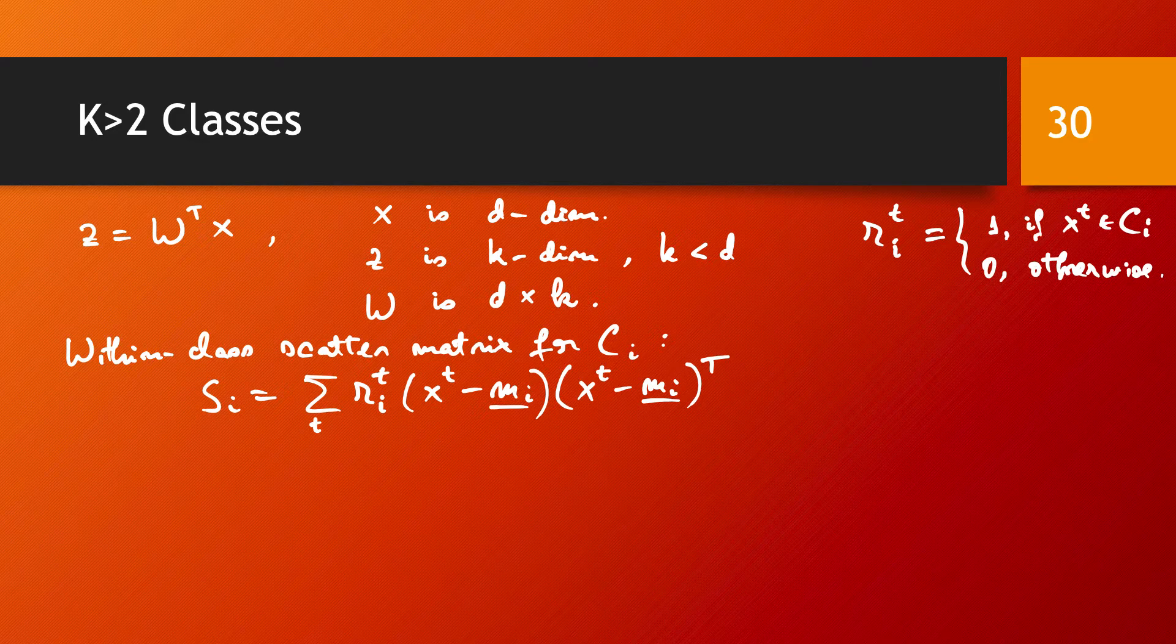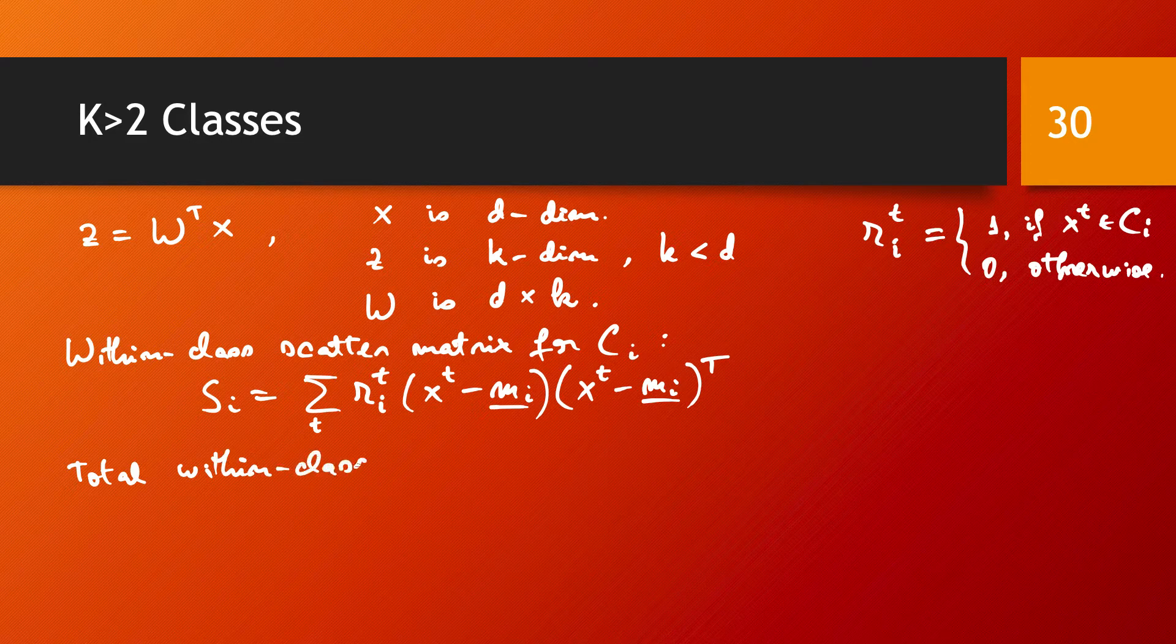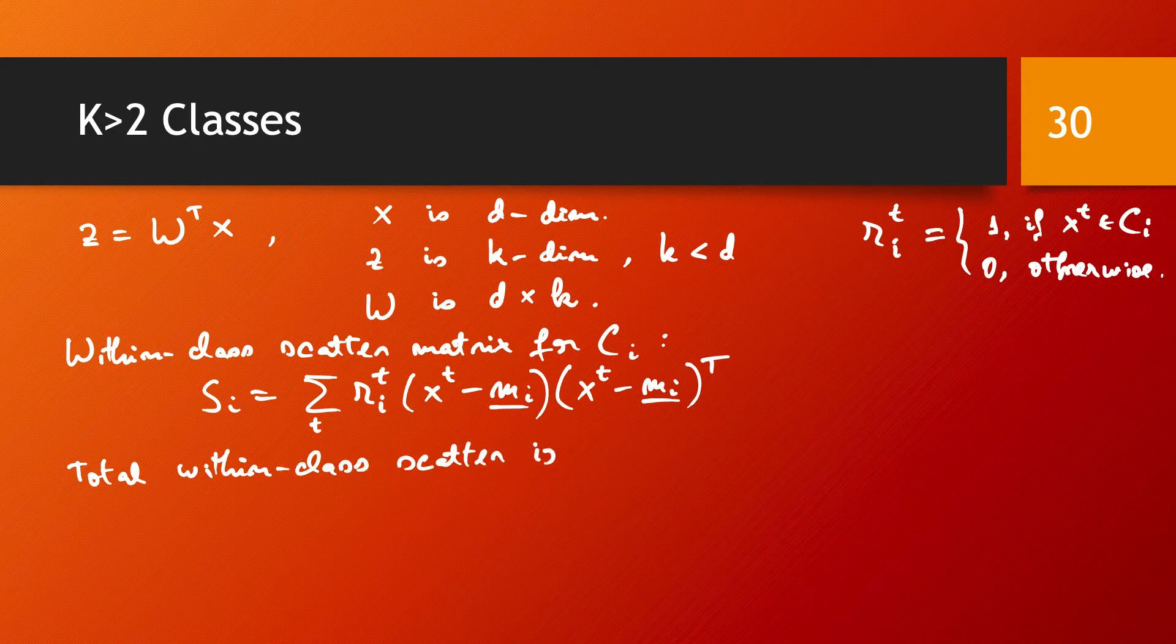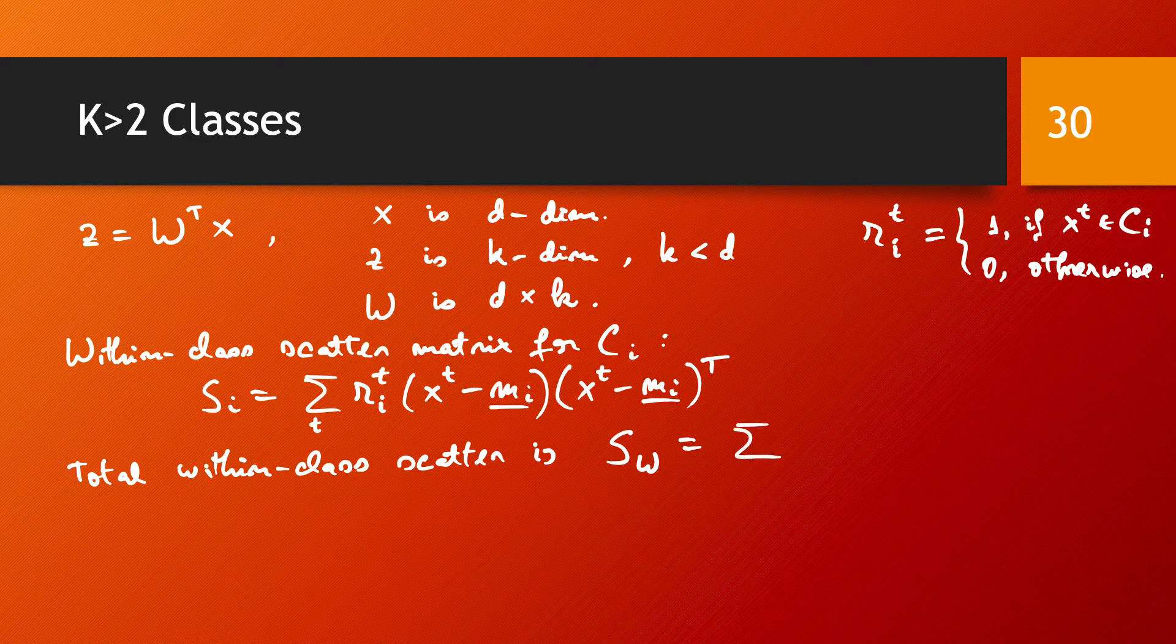And the total within class scatter is, and again, similar as we had in the case of two classes, we have this denoted by S_W, so it's the scatter associated to matrix W to be simply the sum of all these within class scatter matrices. So we have sum from 1 to capital K of S_i.